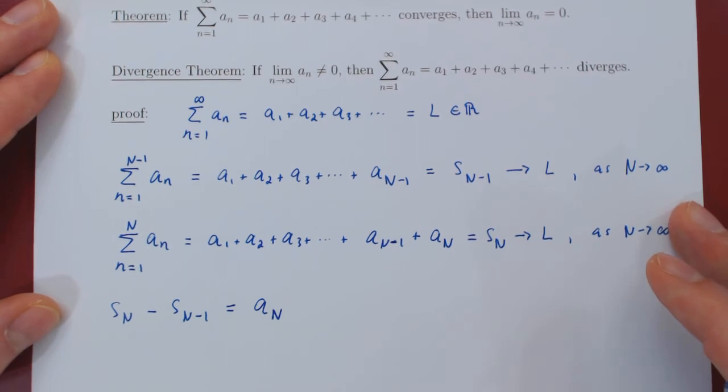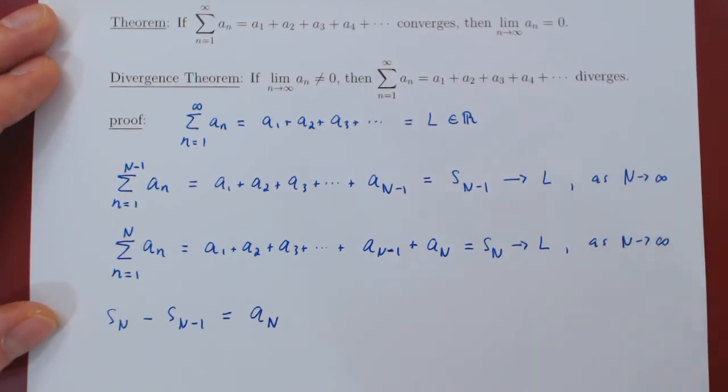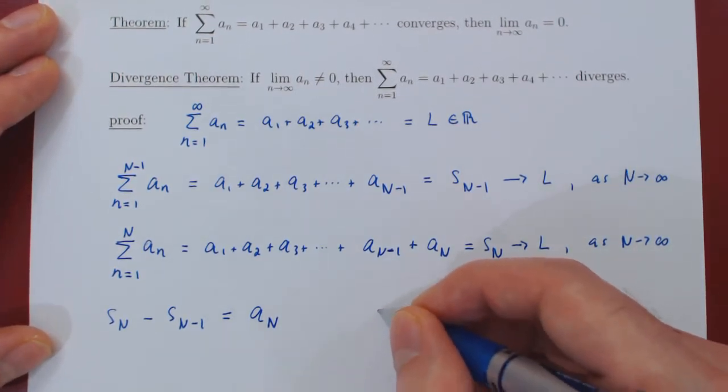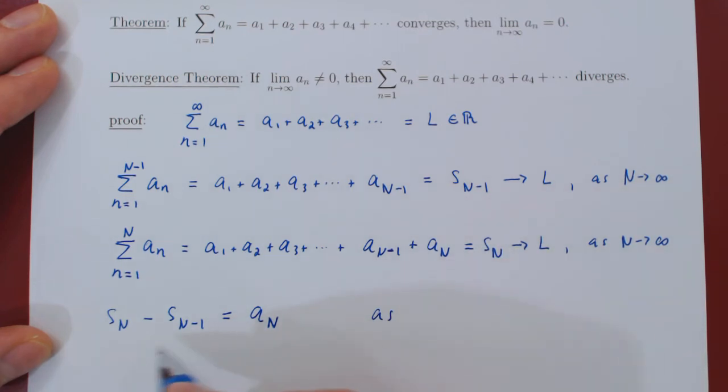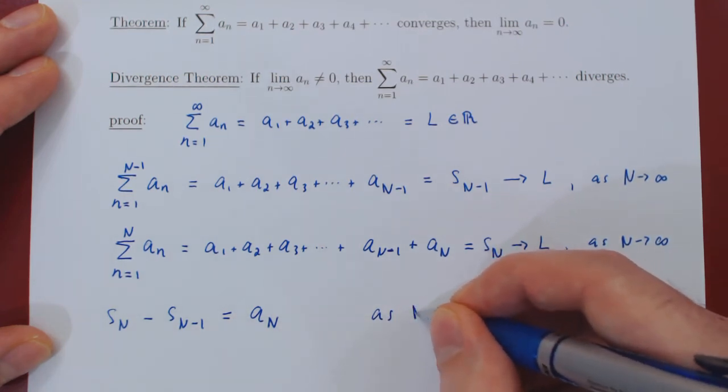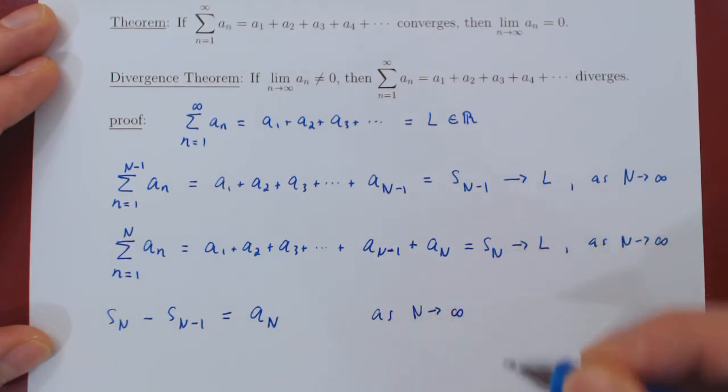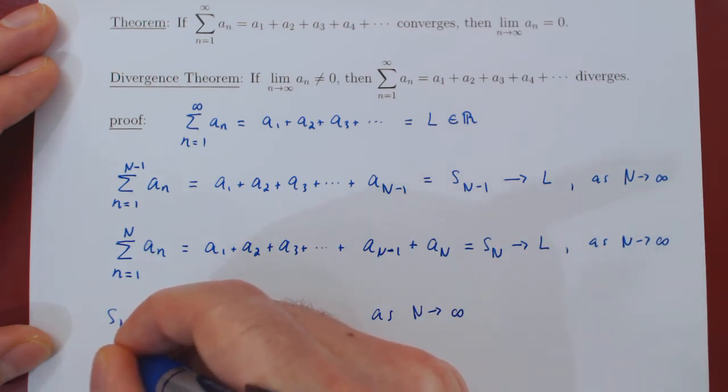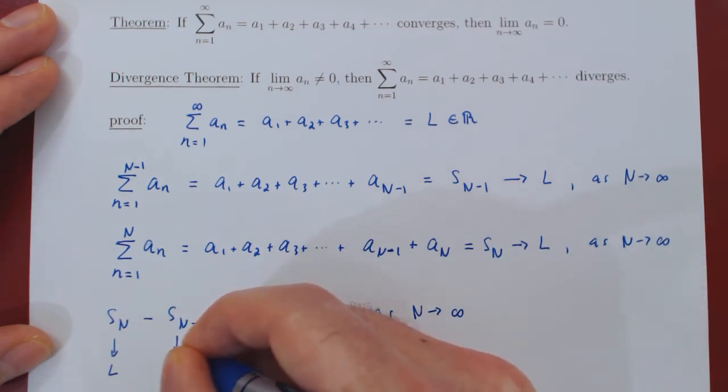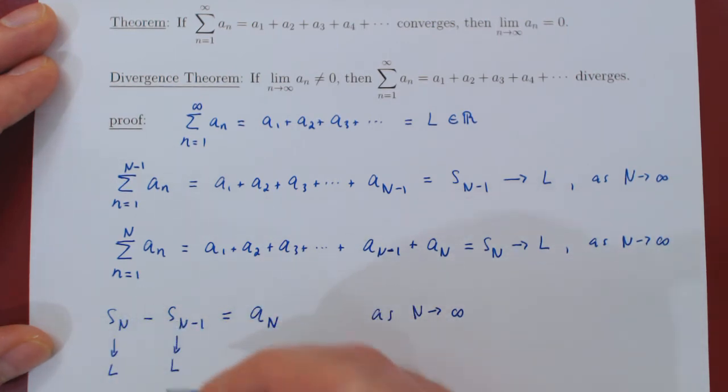And now we simply have to let uppercase N tend to infinity. So as in this equality we are letting N tend to infinity, we know S_N converges to L. We know S_{N-1} also converges to L.